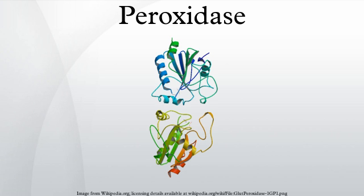While the exact mechanisms have yet to be elucidated, peroxidases are known to play a part in increasing a plant's defenses against pathogens. Peroxidases are sometimes used as a histological marker. Cytochrome C peroxidase is used as a soluble, easily purified model for cytochrome C oxidase.